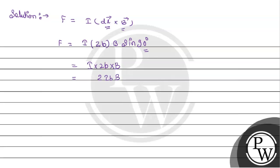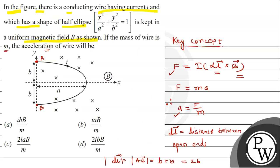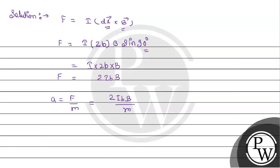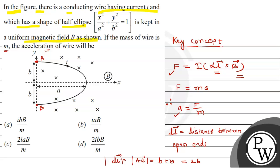Since we need acceleration, a = F/M. Putting the value of F, we get a = 2IBB/M. Given that the current value is I, the acceleration value is 2IBB/M. Therefore, option D is the right option.